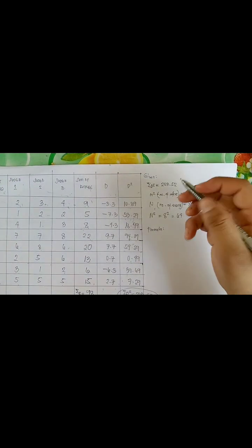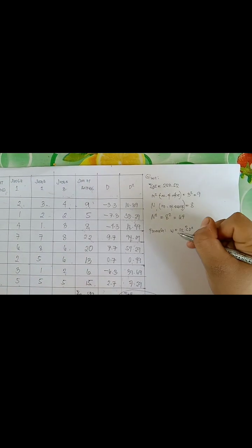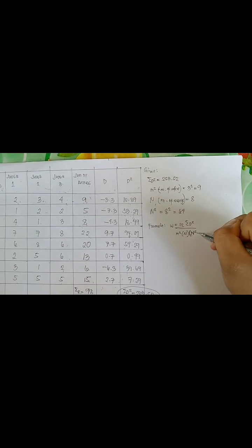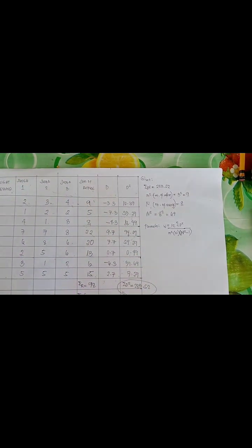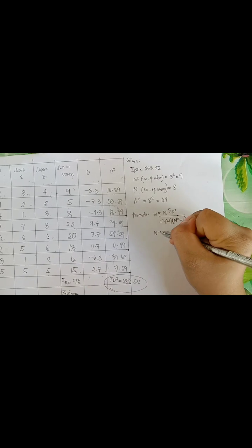The formula is W equals 12 summation of D squared over M squared times N times N squared minus one. Number of essays is eight. Let us now substitute all the given to the formula. We have W equals 12 times the summation of D squared which is 253.52 over M squared which is nine.